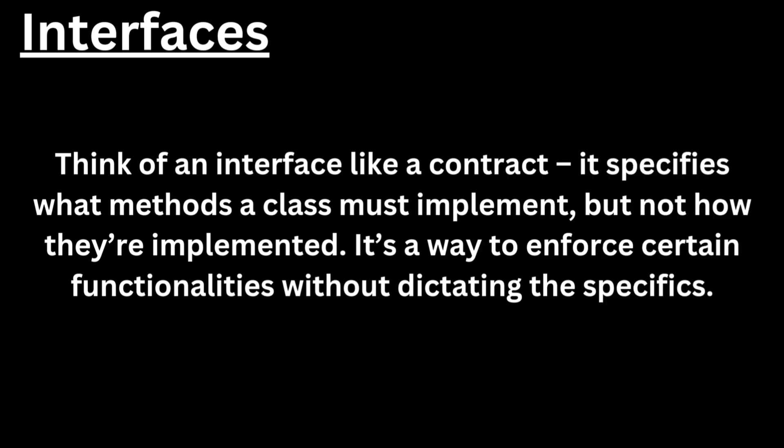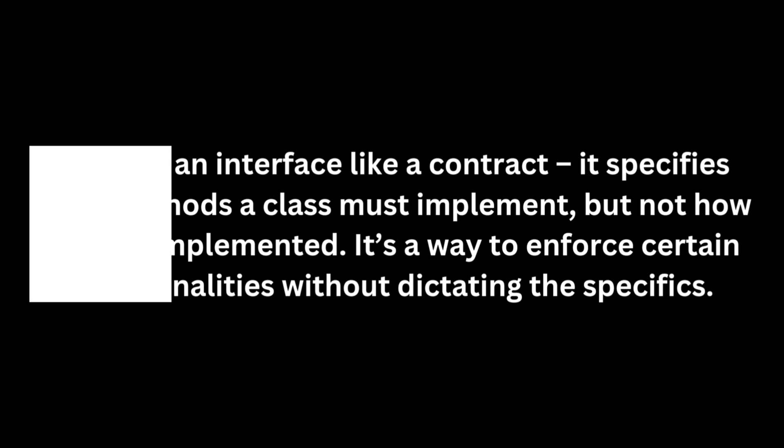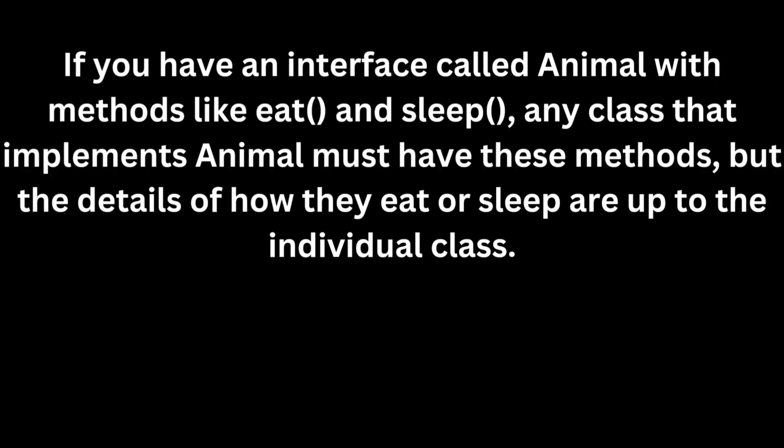Then we have interfaces. Think of an interface like a contract — it specifies what methods a class must implement, but not how they're implemented. It's a way to enforce certain functionalities without dictating the specifics. If you have an interface called Animal with methods like eat and sleep, any class that implements Animal must have these methods, but the details of how they eat or sleep are up to the individual class.